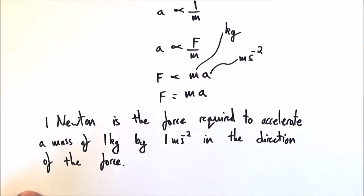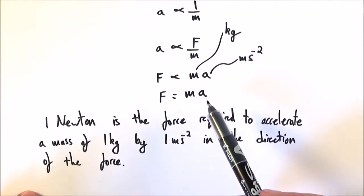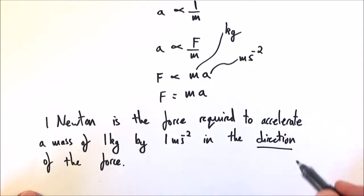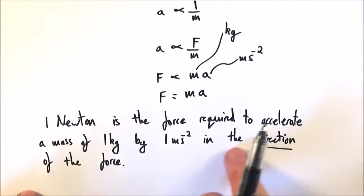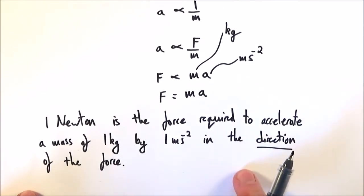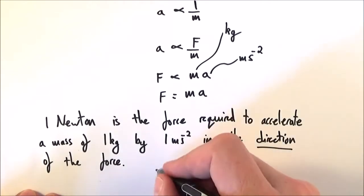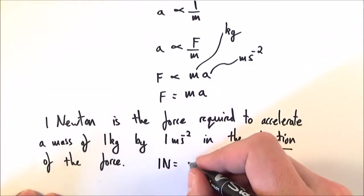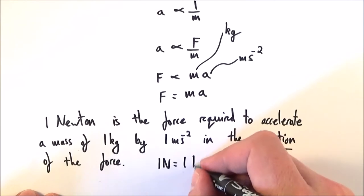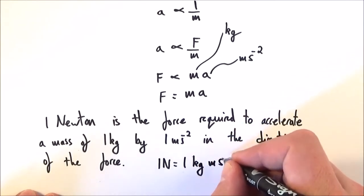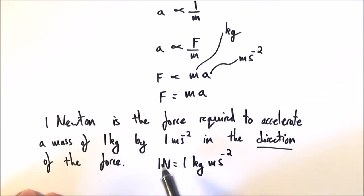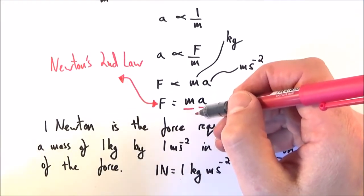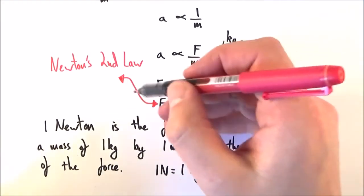One newton is the force required to accelerate a mass of one kilogram by one meter per second squared in the direction of the force. That final part about direction is important and often forgotten. One newton can also be written as one kilogram meter second to the minus two. This gives us our derived unit expressed in base units.